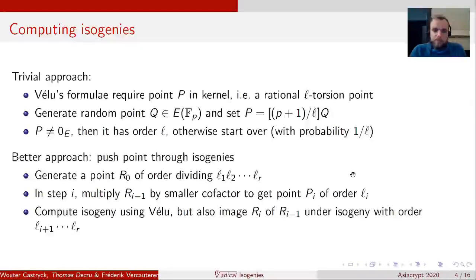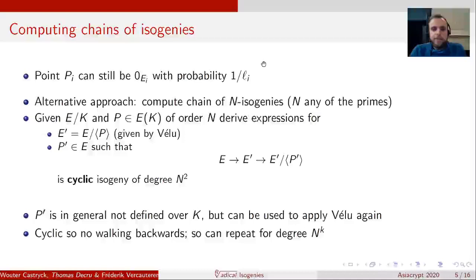In every step i, they only need to multiply the corresponding point by a small cofactor and then you get a point of order L_i. Next, they compute the isogeny with Vélu's formula, rather straightforward, but they also compute the image of R_{i-1} under the isogeny. This computation actually saves a lot of arithmetic because we need to compute scalar multiplication with a lot smaller cofactor every time. However, this doesn't really get rid of the chance of failure. At every step, you still have a probability of 1 over L_i that you end up at a point zero and then you need to start over again.